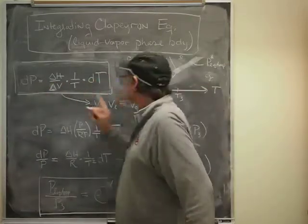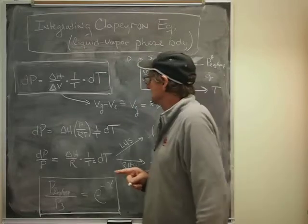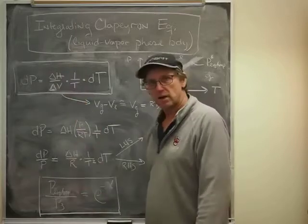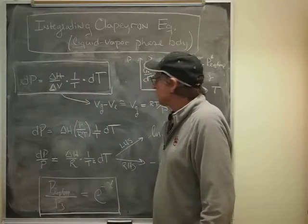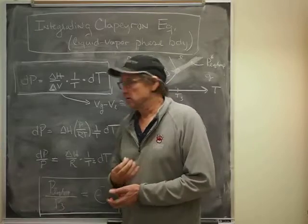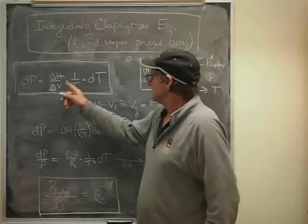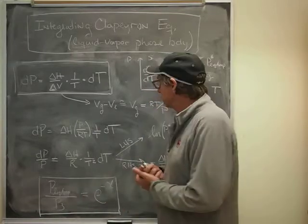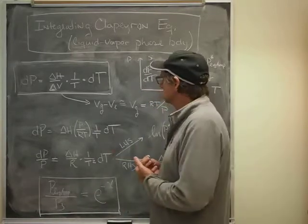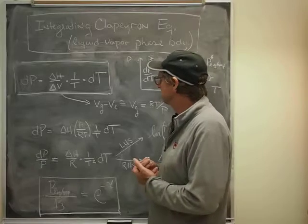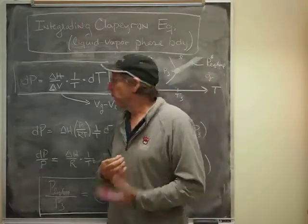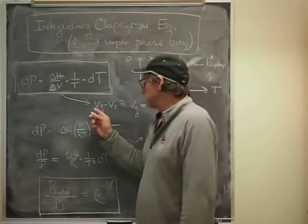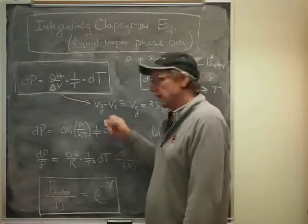A small change in the temperature as I move off to the right from the triple point will result in a change in pressure multiplied by that factor. Because we're dealing with a liquid-vapor phase diagram, that delta H downstairs would be the enthalpy of vaporization, which we're going to consider constant for this derivation. The change in volume, delta V of vaporization, by definition is the volume of the gas minus the volume of the liquid.